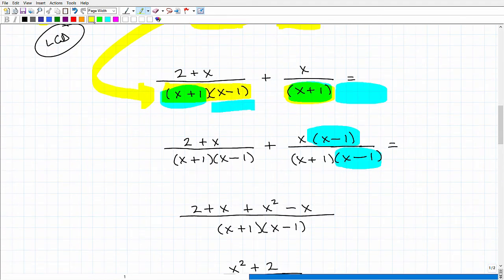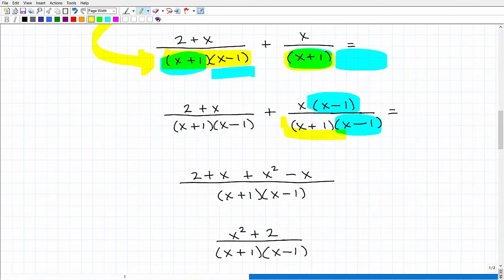All right, so hopefully you'll understand what's going on. Now, at this point, if you look, these two denominators are the same. These are the lowest common denominators. So we have (x + 1)(x - 1) in both denominators.